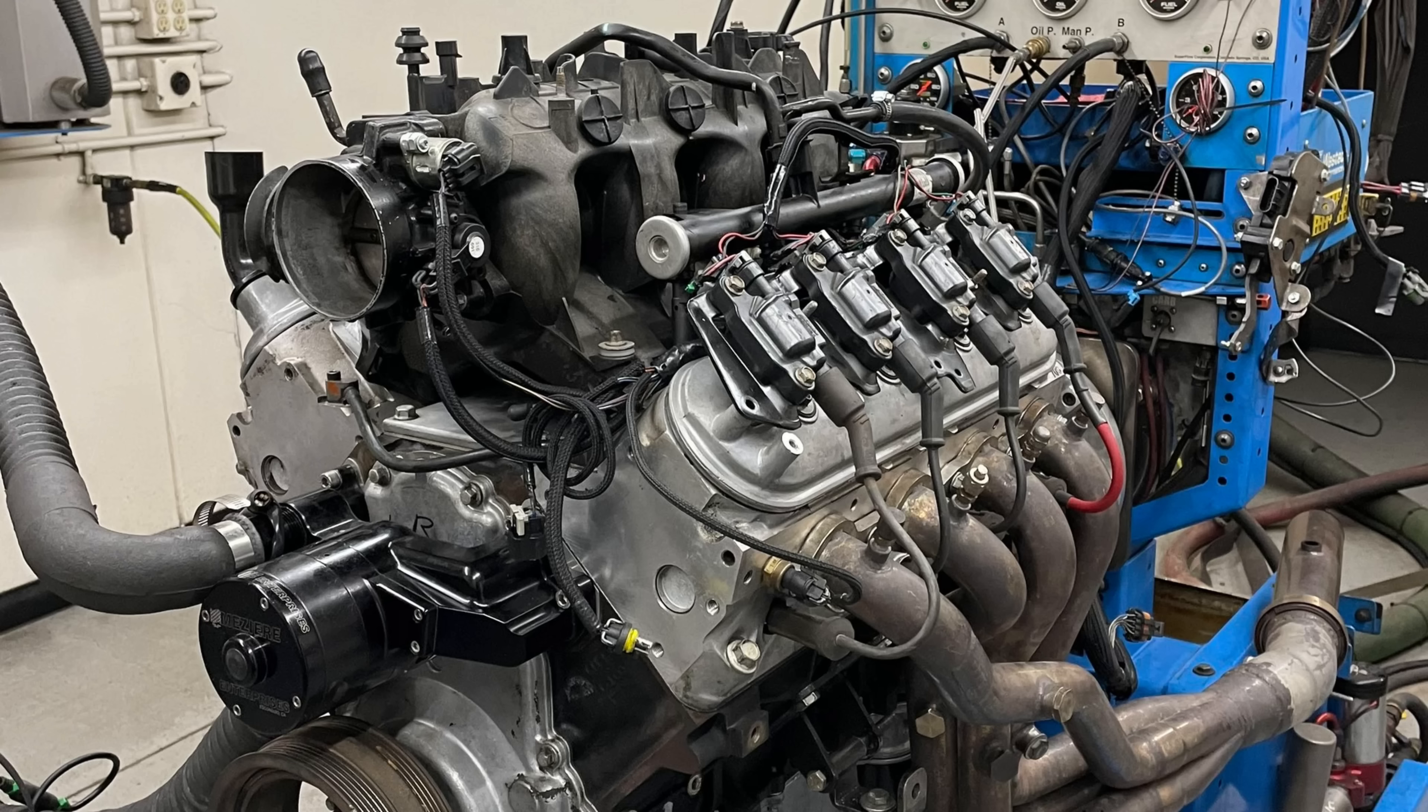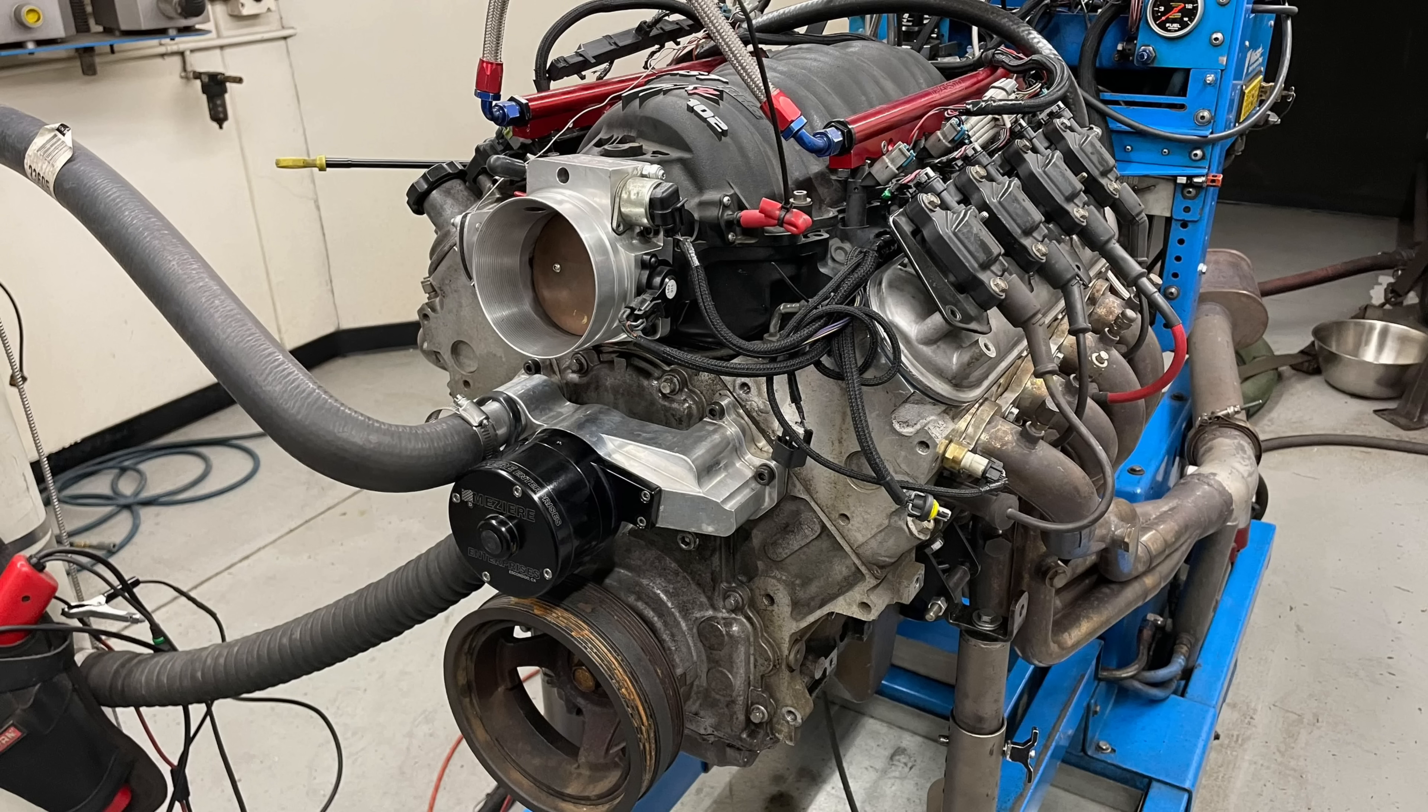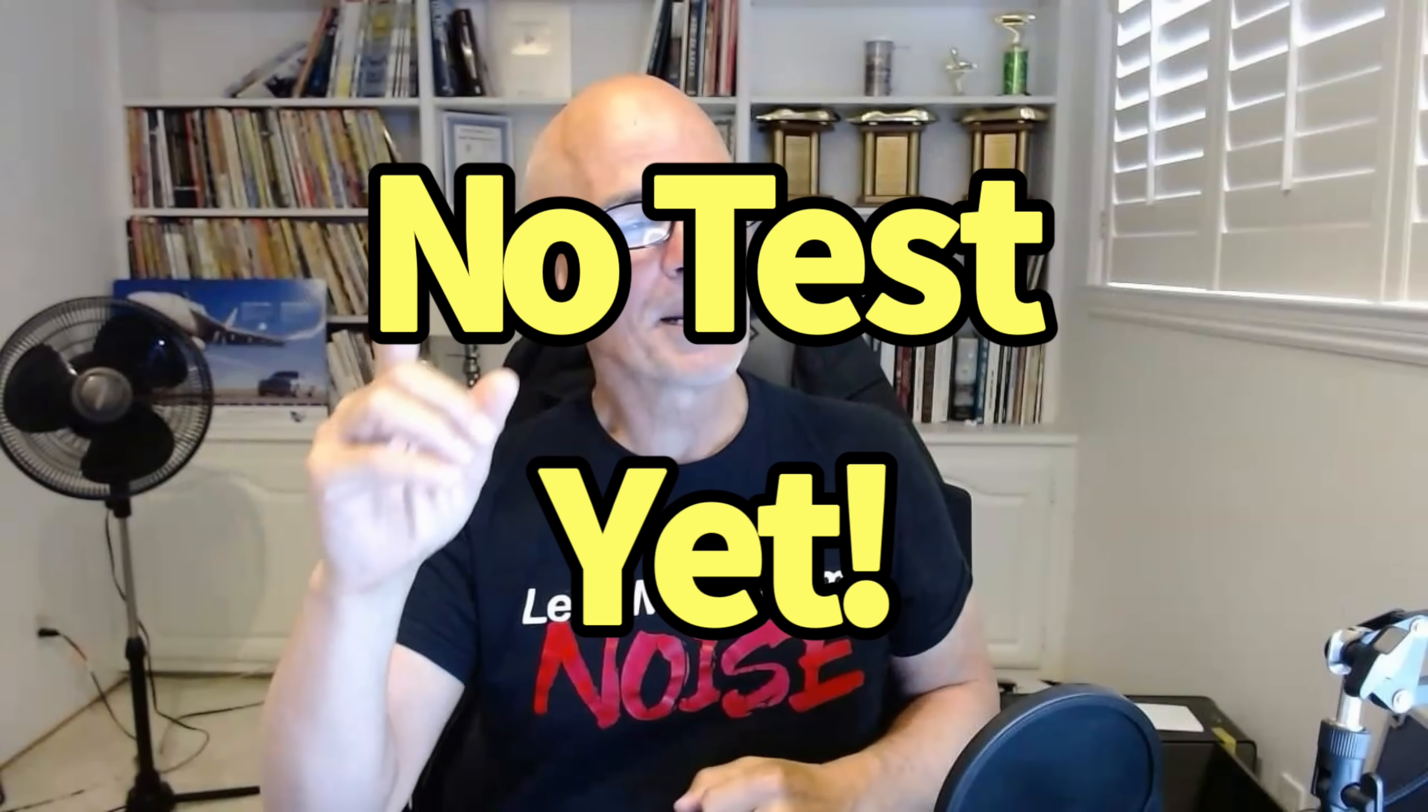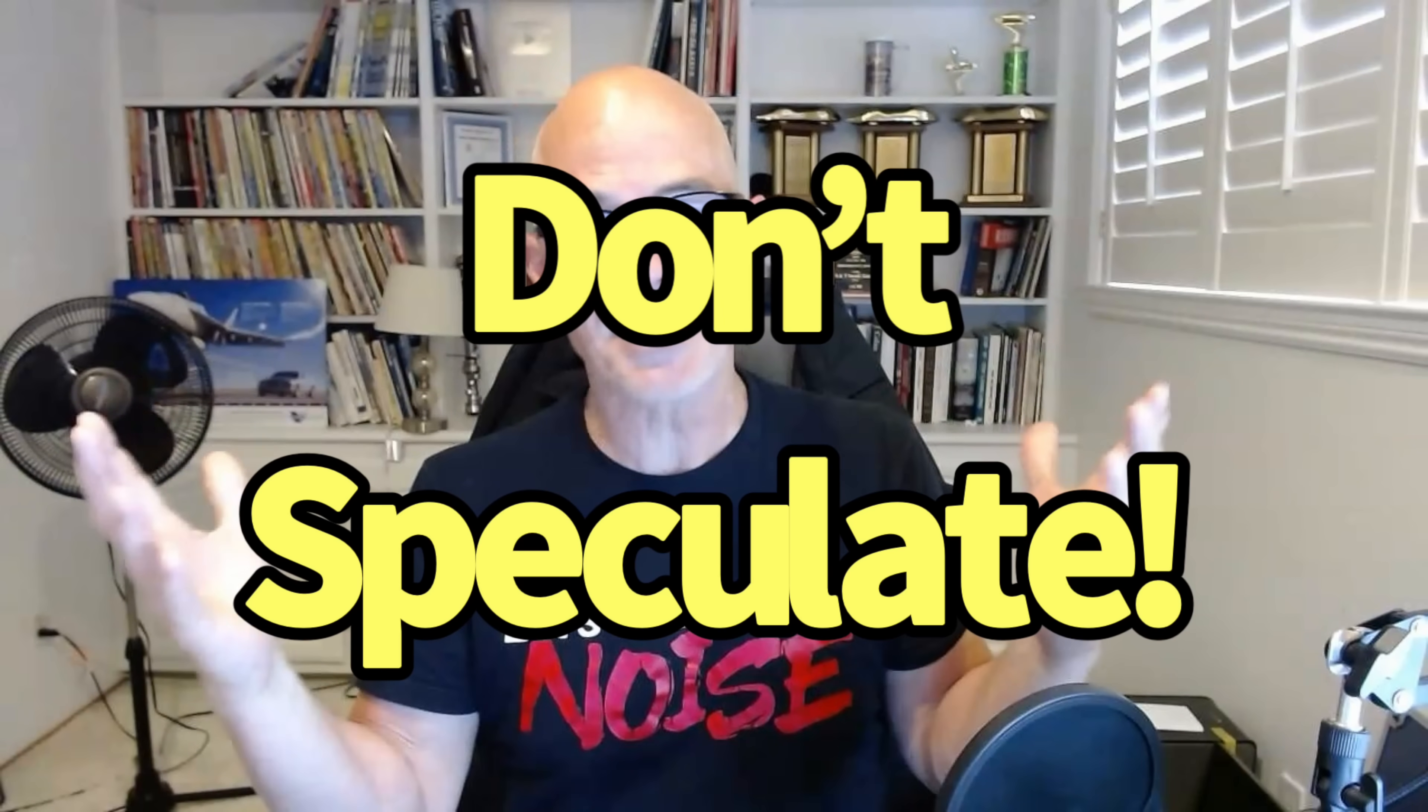But one of my most common questions is, Richard, I know you've run it on a 4.8, and you've also run on a 5.3. What would happen if you ran the Truck Norse Cam from Brian Tooley Racing on a 6-liter? That's a really good question, and unfortunately, I have not run that yet, but I'm going to show you something that's very important.